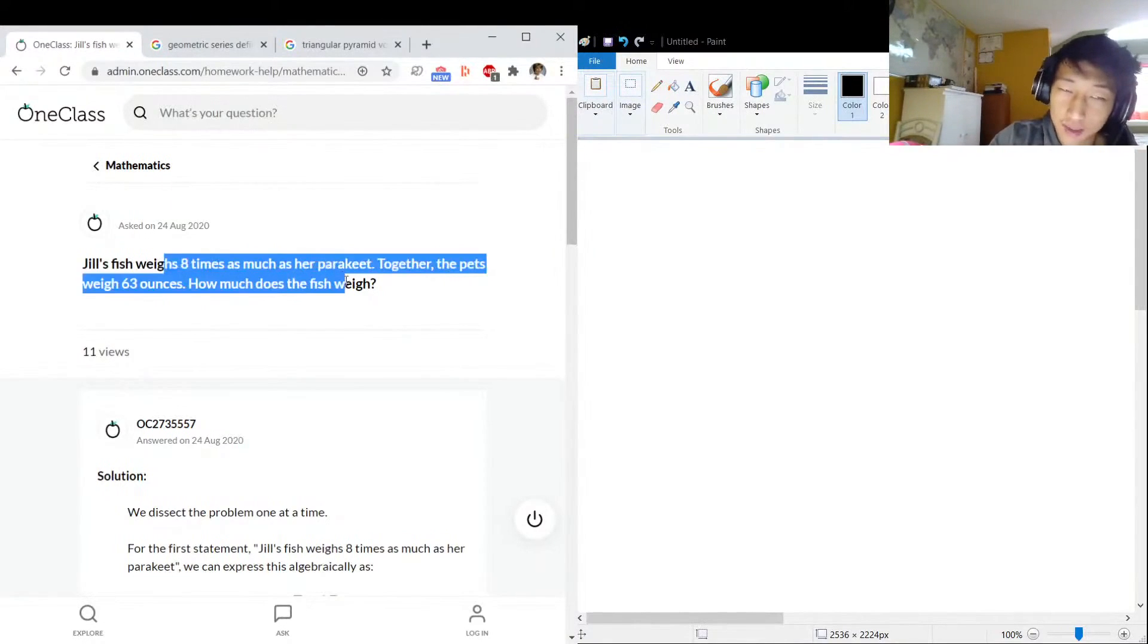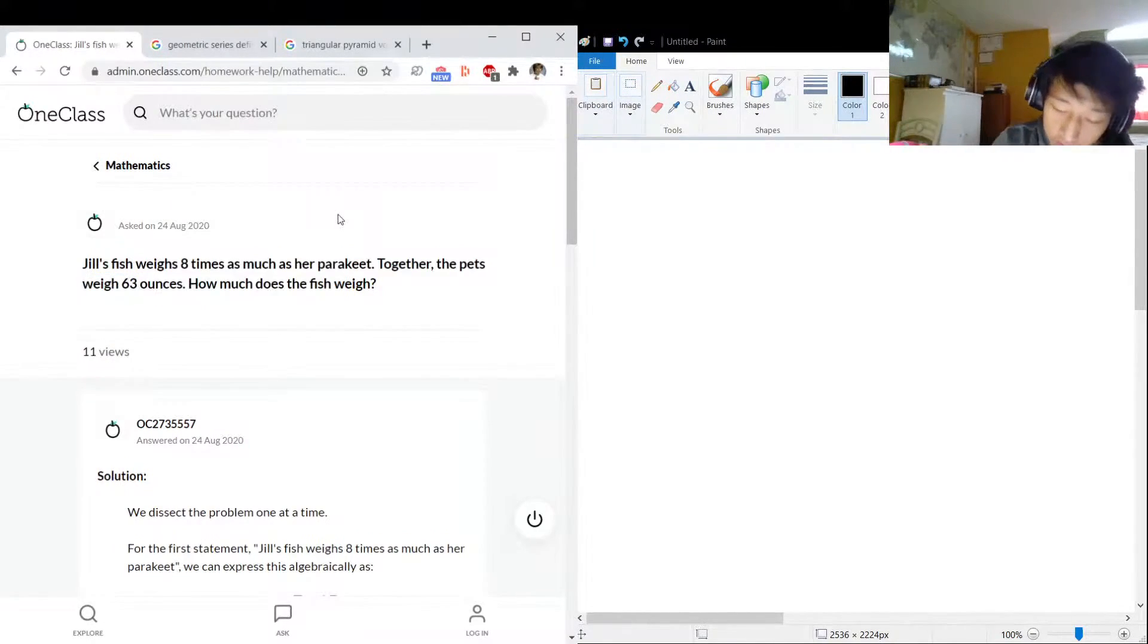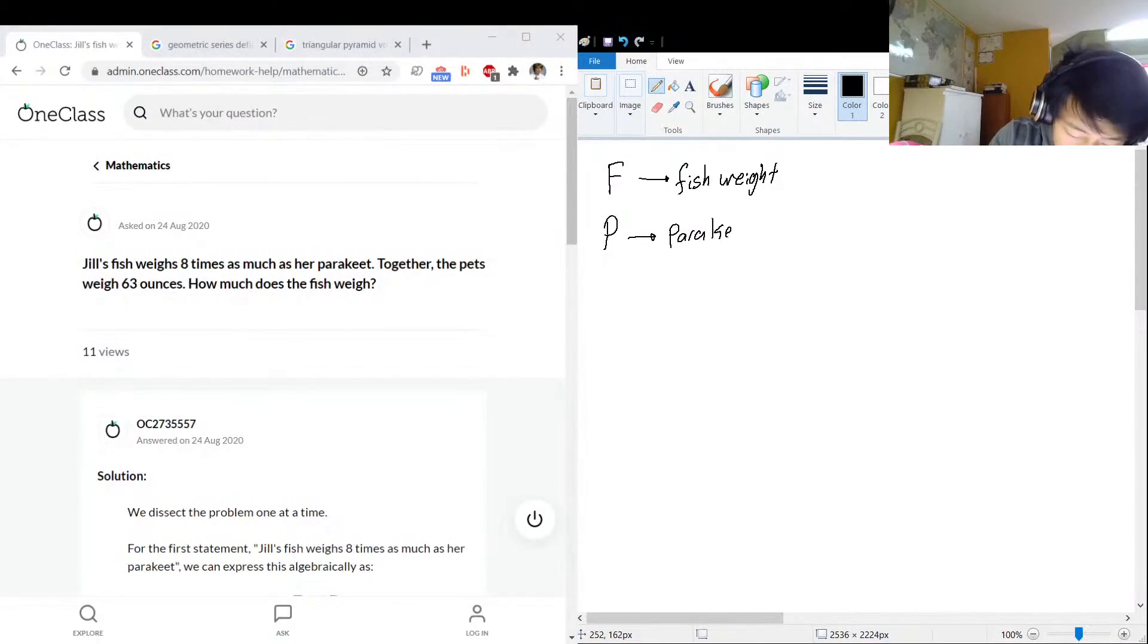With this sentence, we can extract some equations. So let's set up some variables and show what they represent. If we have F, let's call that F, and that will be fish weight. And let's say P, this will be parakeet weight. This might be a shark, or a very small parakeet.